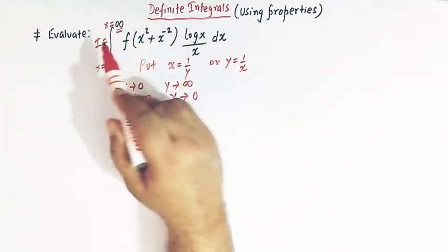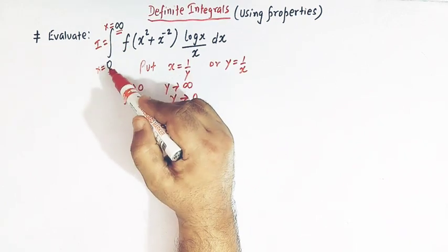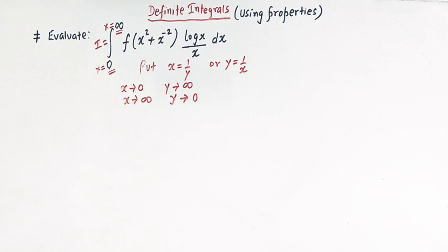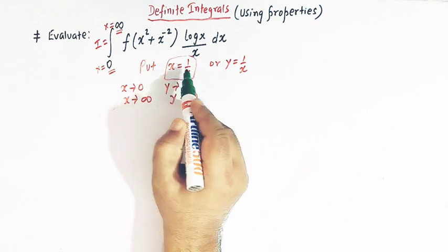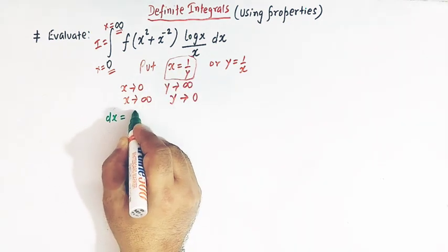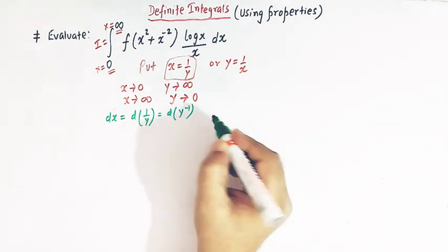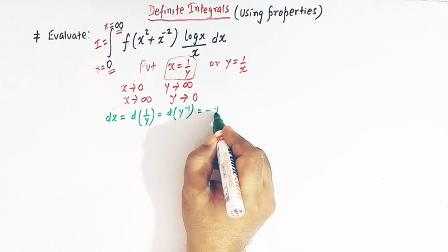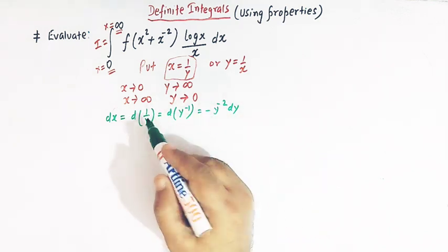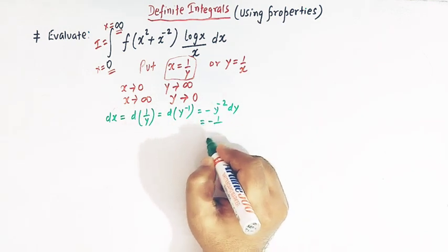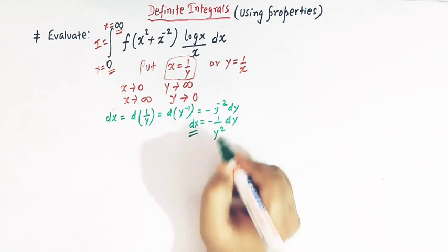So in the integral, when we write it in terms of y, the limits will interchange. Now let us differentiate this relation. dx is equal to d of 1 over y, which is d of y raised to minus 1, giving us minus y raised to minus 2 dy. So the derivative of 1 over y is minus 1 over y squared dy.